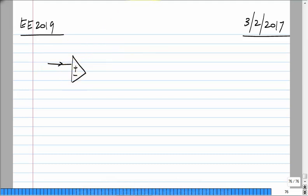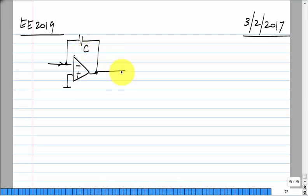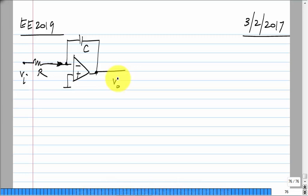From this current to this voltage you have an integral relationship, and we would like to have a voltage input. So we convert the voltage to current using a resistor. Now assuming that the op amp is operating in the high-gain region, it has a large loop gain, and with negative feedback and large loop gain this node is forced to be zero. That gives you a current of Vi/R which flows into the capacitor.